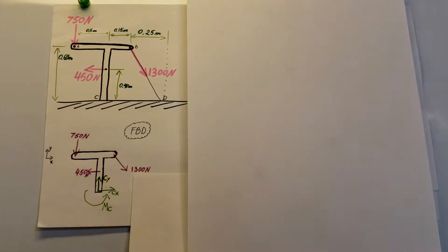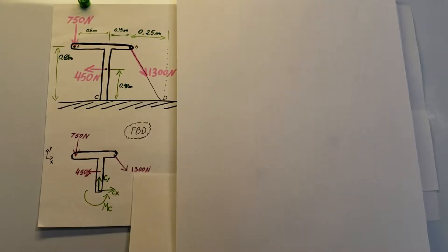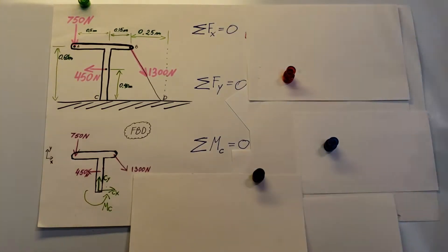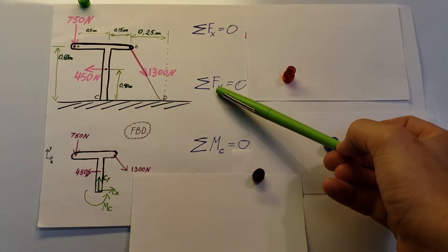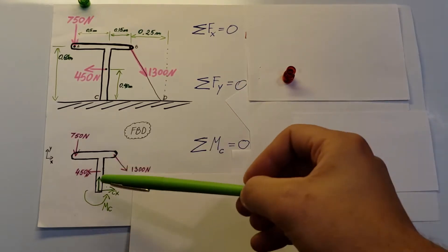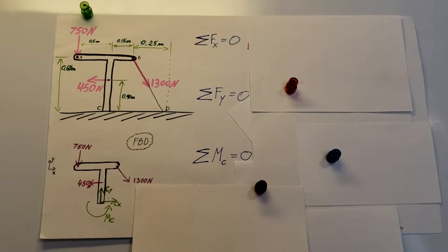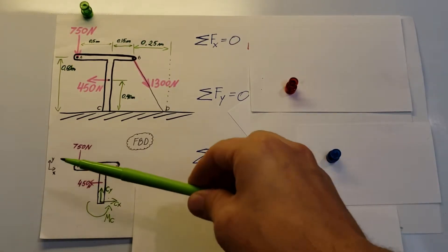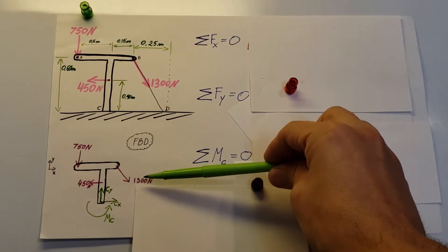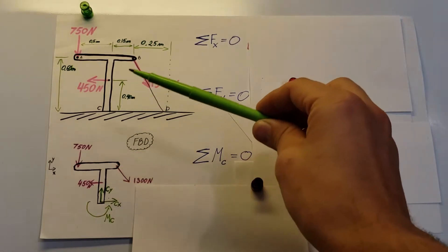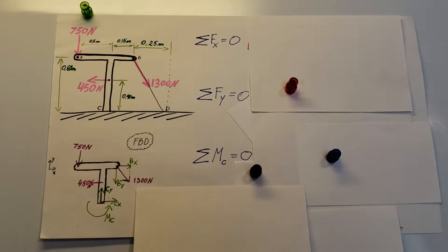I'll assume MC in the positive direction. Now, the three things we need to calculate to find the reaction at point C are: the sum of forces in the x direction, the sum of forces in the y direction, and the sum of moments at point C. Since we're working in x and y, it's beneficial to break up the 1300 newton force into its x and y components.